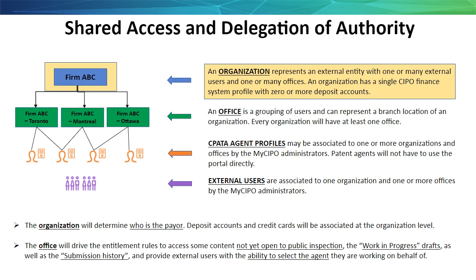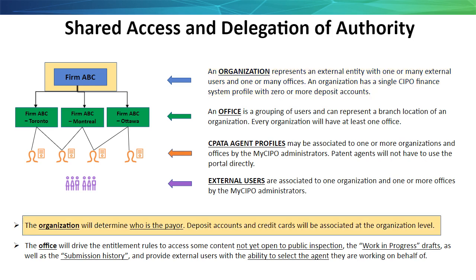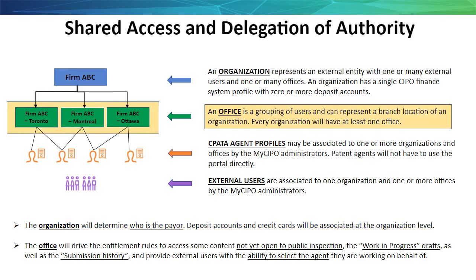an organization represents an external entity with one or many external users and one or many offices. An organization has a single SIPO finance system profile with zero or more deposit accounts. The organization will determine who is the payer. Deposit accounts and credit cards will be associated at the organization level. An office is a grouping of users and can represent a branch location of an organization. Every organization will have at least one office.